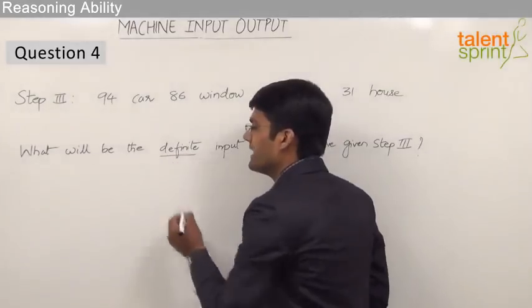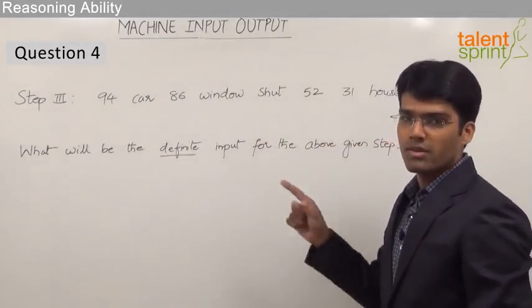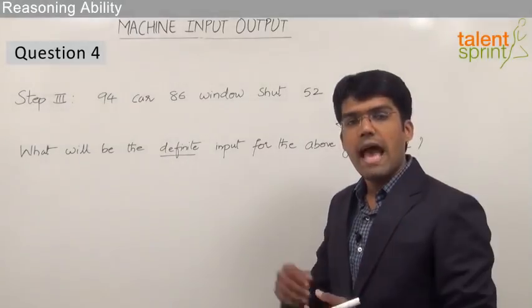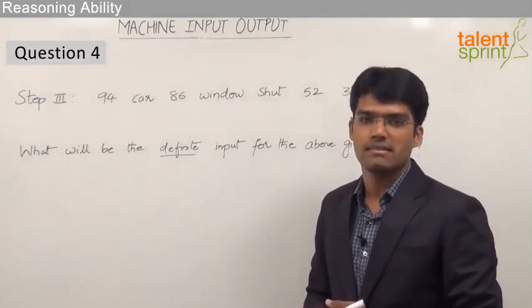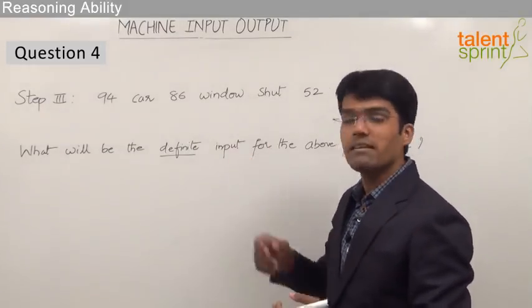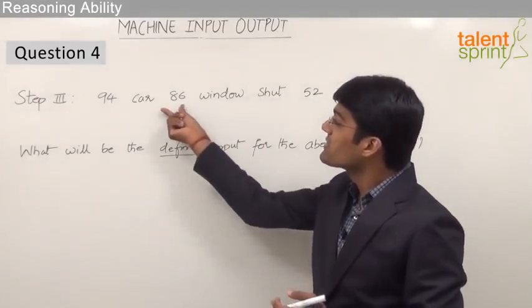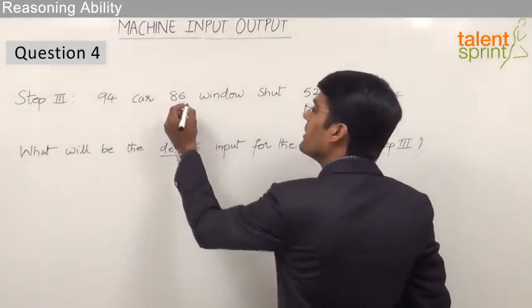the word 'definite' here. As the given step is Step 3, it is obvious that the first three positions are correct. We can understand that in this particular step, the third position was moved from some other place. That means this number 86 was brought from some other position in Step 2.